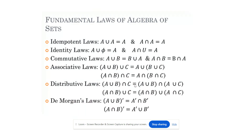There are fundamental laws of algebra of sets. The first law is the Idempotent law: A union A is equal to A, and A intersection A is equal to A. Identity law: A union phi is A, and A intersection U is equal to A. Commutative law: A union B is equal to B union A, and A intersection B is equal to B intersection A.